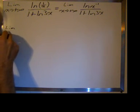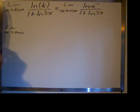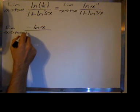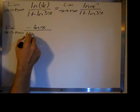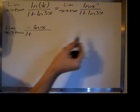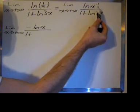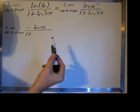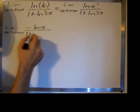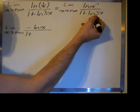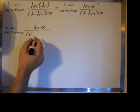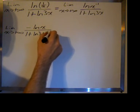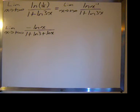We have the limit as x goes to positive infinity of negative ln(x) over 1 plus... another property of logarithms is here we have the logarithm of 3 times x. A logarithm of a product is the sum of the logarithms of the individual arguments, so we can break the natural log of 3x into ln(3) plus ln(x).